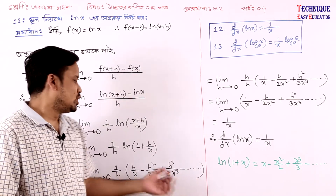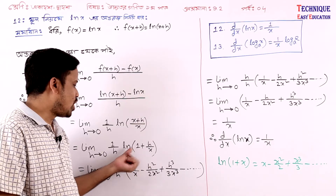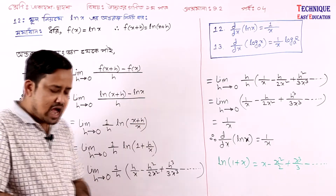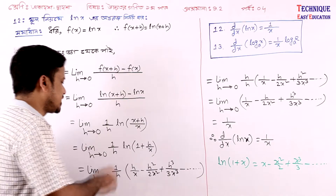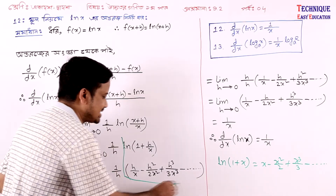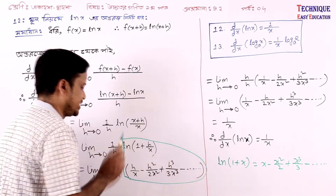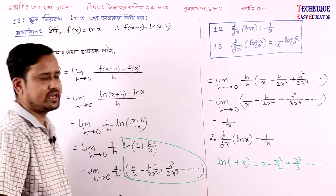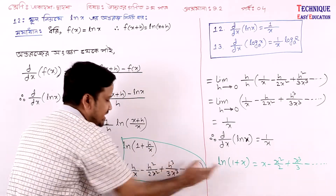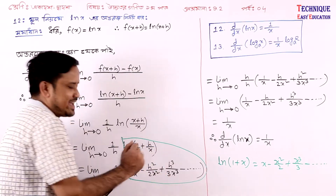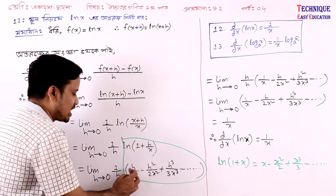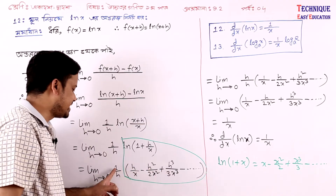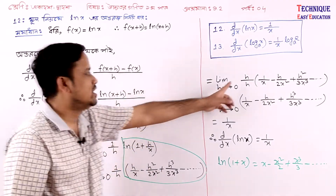Minus. Just, I'm using the sutra: ln(1 + h/x). The sutra gives us ln(1 + h/x). The base formula: ln(1+x) divided by x. Taking H common from everywhere — H is common in all terms.